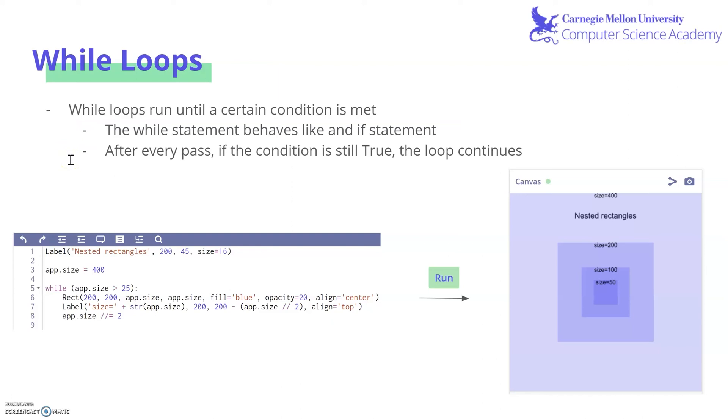So let's take a look at this demo. We have some rectangles. We have an app.size set, which is a custom property. And here is our while statement. While app.size is greater than 25, we're going to draw a rectangle, draw a label, and decrease app.size by integer dividing it with 2. And then once that is done, it'll go back to check if this is still true. If it is, it'll run it again and decrease app.size. Once app.size is smaller than 25, this while loop no longer runs.